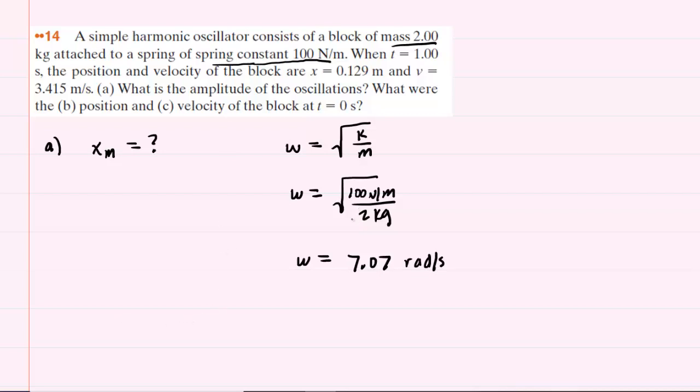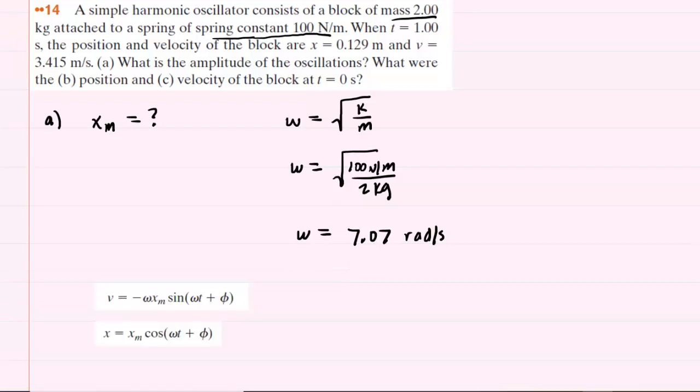Let's consider a couple of equations from simple harmonic oscillators. The first equation gives us the velocity of the simple harmonic oscillator in terms of the angular frequency, amplitude, the time, and then the phase constant. And the second equation gives us the position based on the same sort of values. It's going to turn out to be useful for us to divide these two equations.